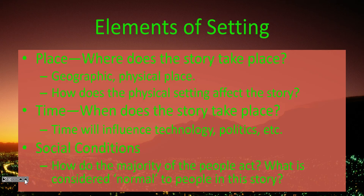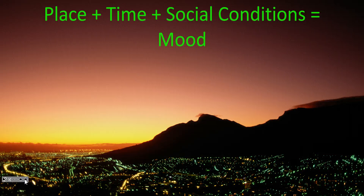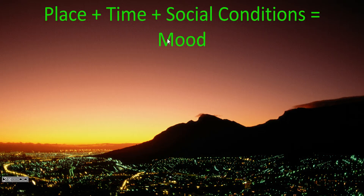The last element is the trickiest one because it's kind of abstract — there's not an easy definition for it. You kind of have to figure it out as you read: the social conditions, which is just what are the majority of people like, how do the majority of people act, what is considered normal in that society or in that story? Those three things are the most critical elements of the setting. If you blend place, time, and social conditions in your mind, what you get from that is the mood — the overall feeling that the setting creates for the story.